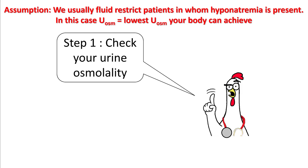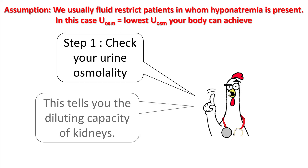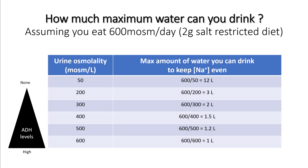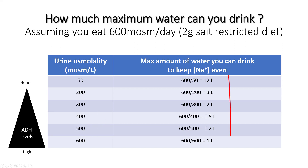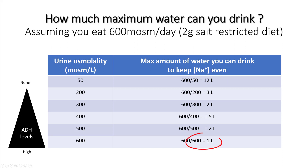Step 1: check your urine osmolality, as it will give you the diluting capacity of the kidneys. If you are on a 2 gram salt restricted diet, you are eating around 600 milliosmoles per day. Depending on your ADH state, your urine osmolality is going to change — as your ADH rises, your urine osmolality rises, and the maximum amount of water you can drink to keep sodium from falling will drop. As you can see in this table, if you are normal you can drink up to 12 litres without becoming hyponatremic, but if your urine osmolality is 600, drinking more than 1 litre will cause hyponatremia.